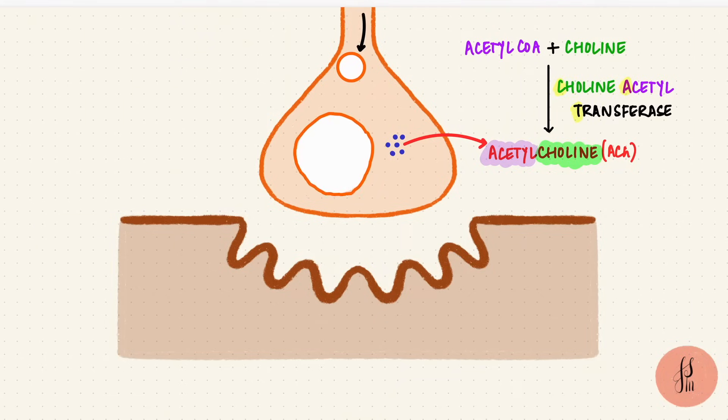The vesicles have proton pumps in their walls. They bring hydrogen ions into the lumen against the gradient, so they hydrolyze ATP for that. Then by an acetylcholine-hydrogen ion exchanger, the hydrogen ions leave the vesicle and the acetylcholine enters.